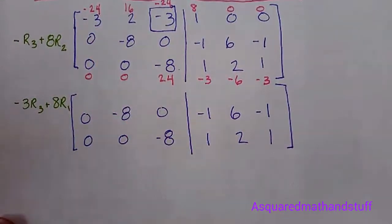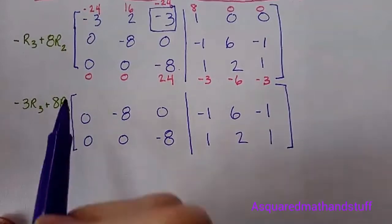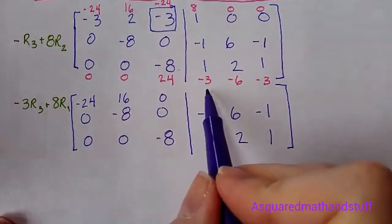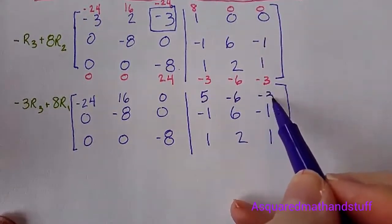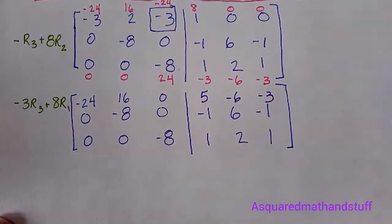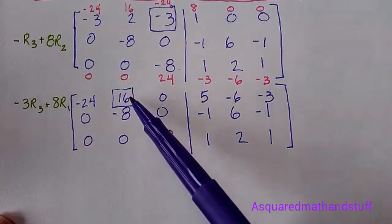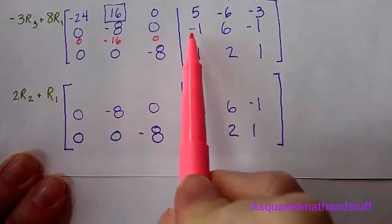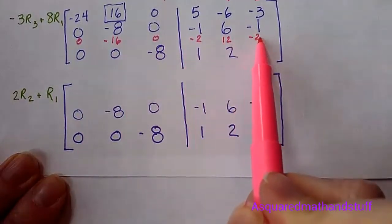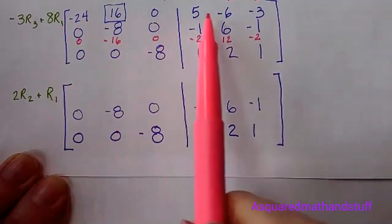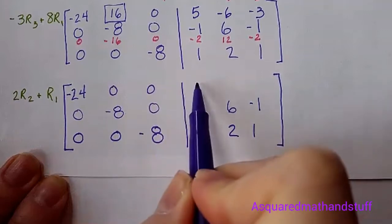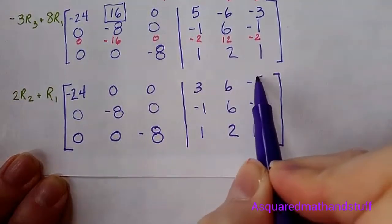Adding these pink numbers together to get our new row 1, we will have negative 24, 16, 0, 8 minus 3 is 5, negative 6, and negative 3. The next goal is to get this 16 to be a 0. So let's do 2 times row 2 and add that to row 1. 2 times row 2, we will have 0, negative 16, 0, negative 2, 12, negative 2. Adding those pink numbers to all of the numbers in row 1, we get negative 24, 0, 0, 3, 6, and negative 5.